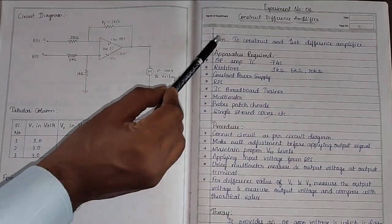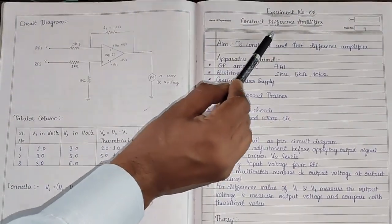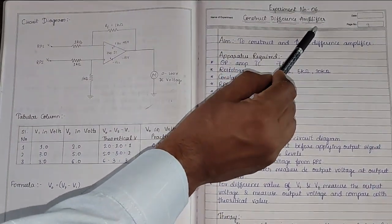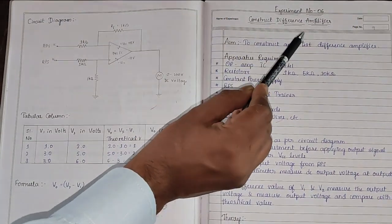In this video I will explain about the difference amplifier using op-amp. It is also known as subtractor using op-amp.